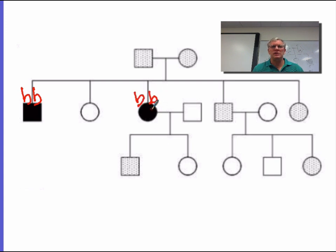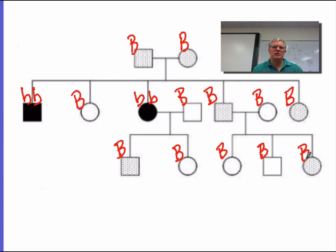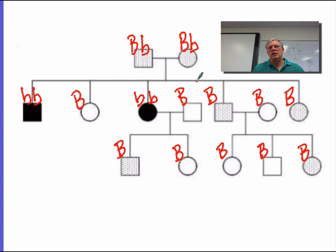In order to have the disease, they have to have both recessive alleles. So everybody that doesn't have the disorder has at least a big B. We know that much for all the rest of them. Now let's see if we can figure out the second allele for the ones that don't have the condition. When you have children that have a recessive condition, that means they got a recessive allele from both parents — a little b from mom and a little b from dad. So that tells us that mom and dad both must be heterozygous: big B, little b.